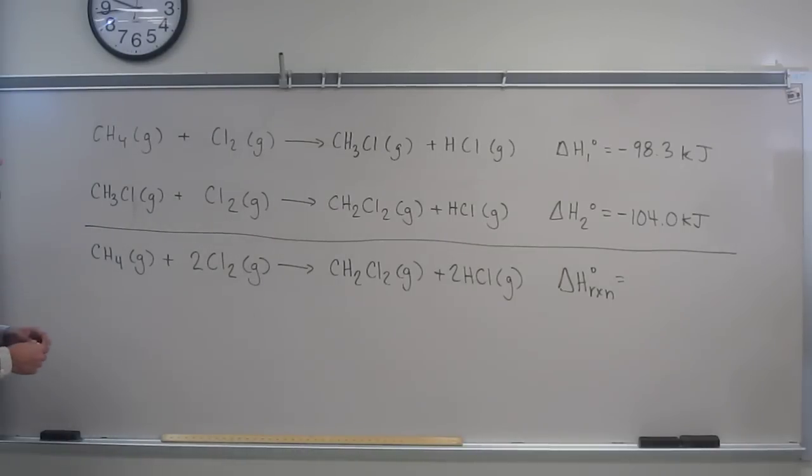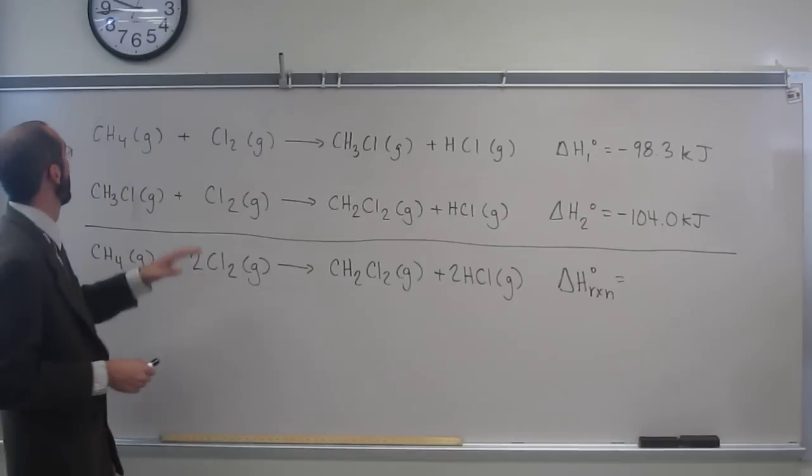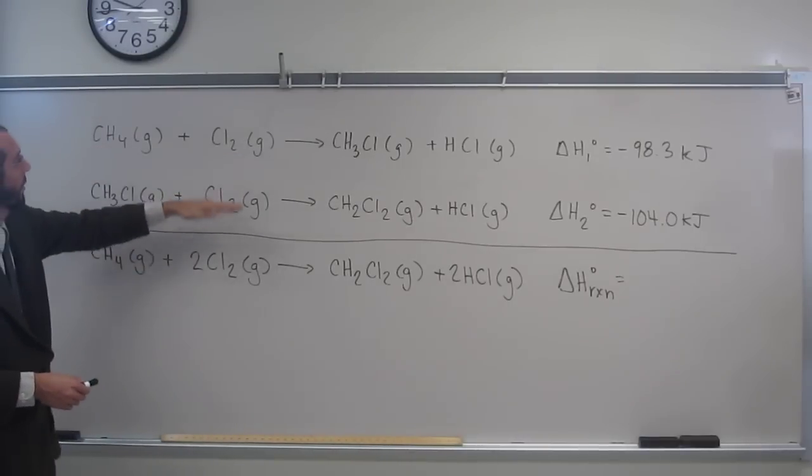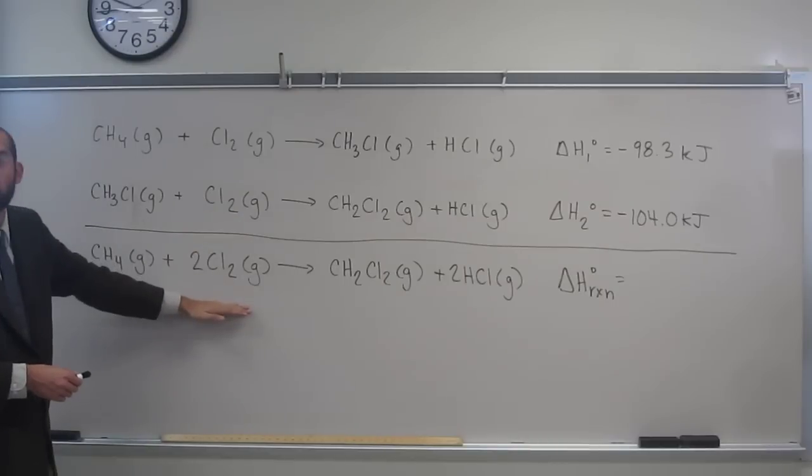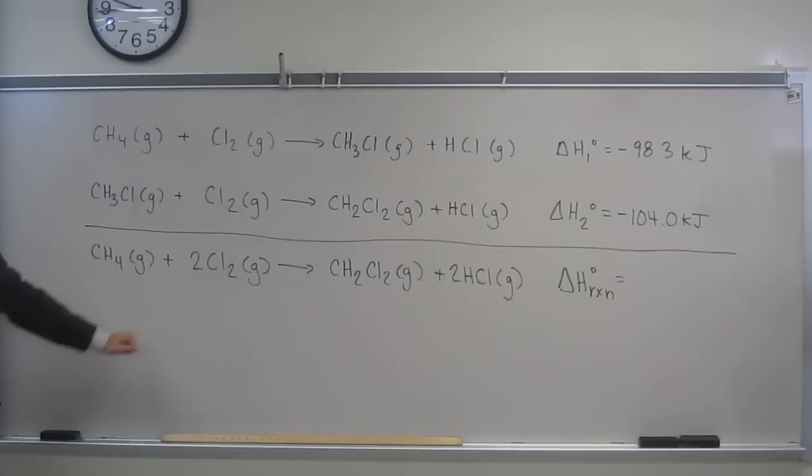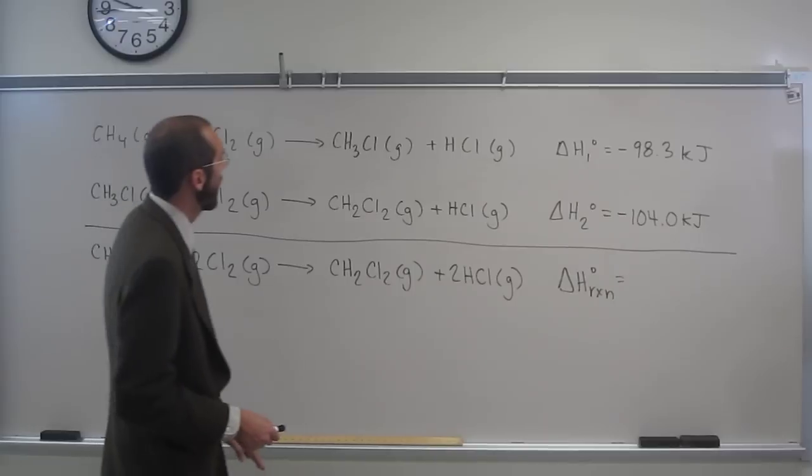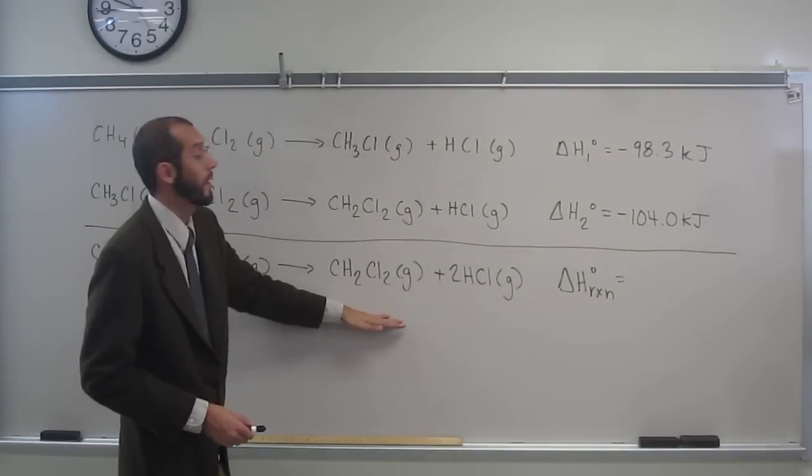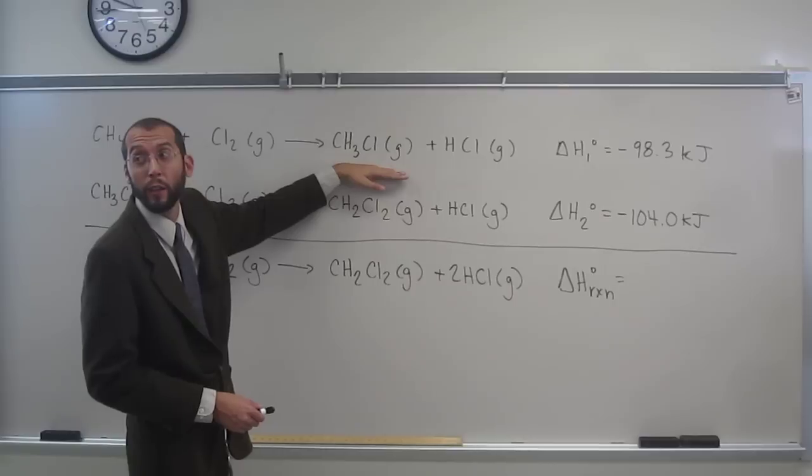So we see we have methane here, one methane, and we have one methane here. Two chlorines here, and two chlorines here, so that's good. But we have this chloromethane here that's not present here. So if we look over here, we've got the two HCls, that's good. Dichloromethane, that's good, but we've got that chloromethane here.